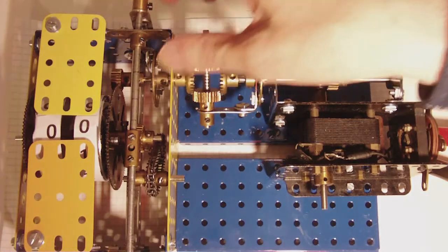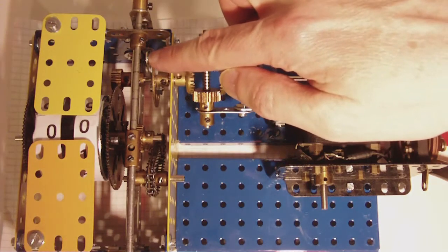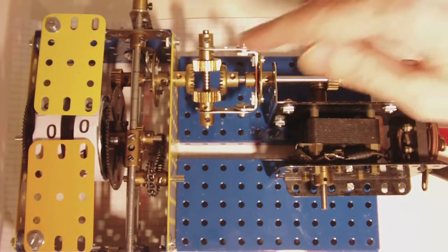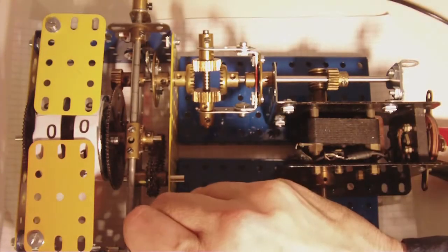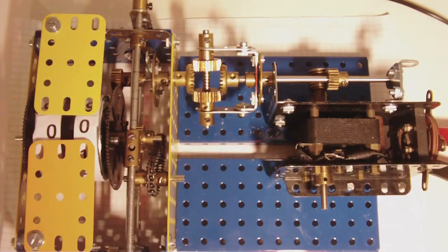The mechanism is fairly straightforward. There's a bushwheel here with two prongs on it. As you push this button, it allows it to move on by half a turn.